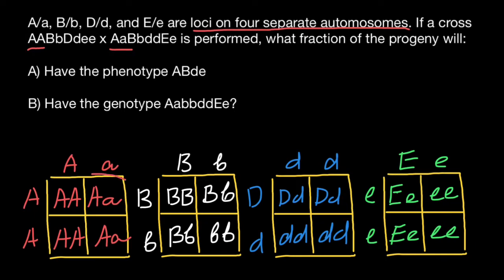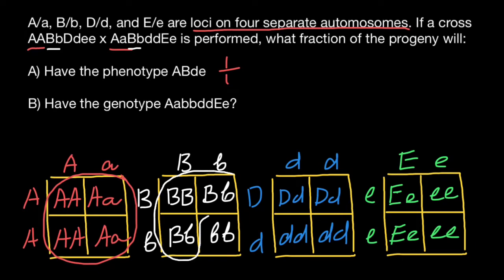As you can see, all progeny of this cross are going to be dominant phenotype, so 100%, or as a fraction, one over one. For the next allelic pair, gene B, parent one is heterozygous and parent two is also heterozygous. We are looking for the probability of the progeny expressing the dominant phenotype, and as you can see, the probability is going to be three-quarters for gene B.